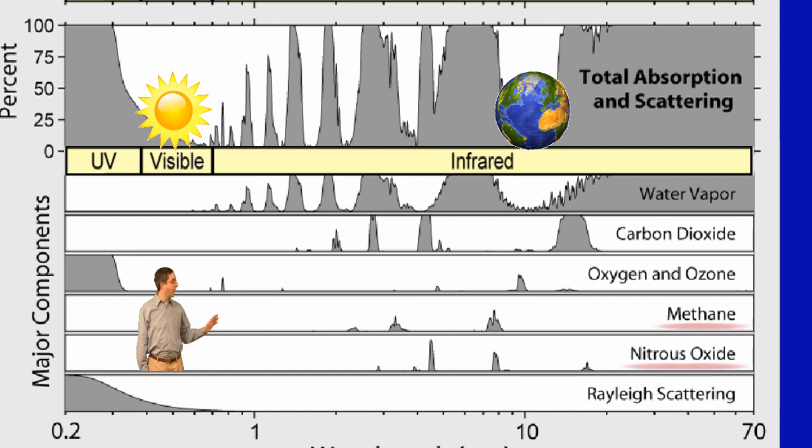Finally, there are trace gases like methane and nitrous oxide. Both are strong absorbers, but fortunately they make up just over two parts per million of the atmosphere. That's 0.00021%.